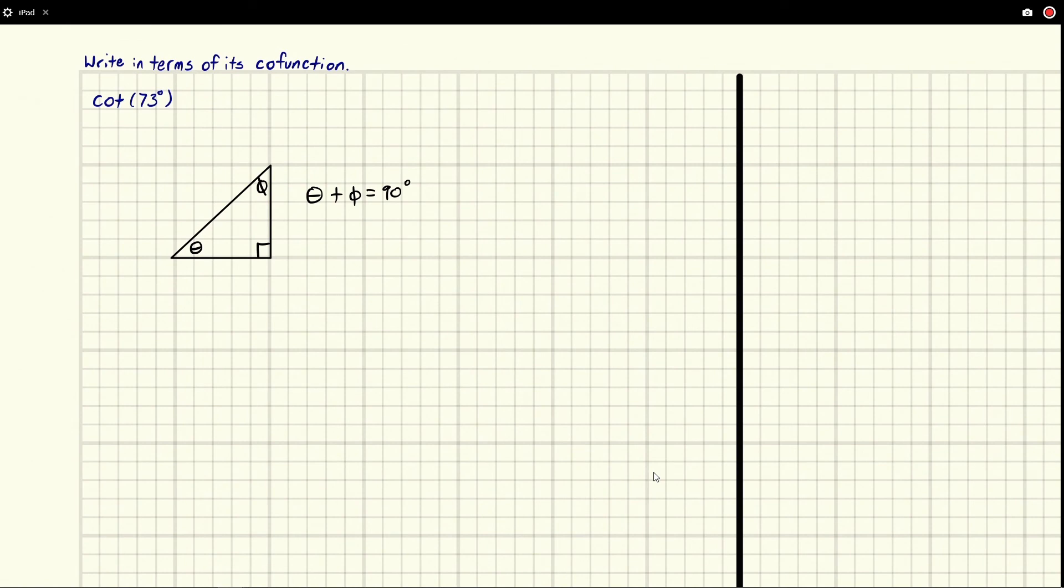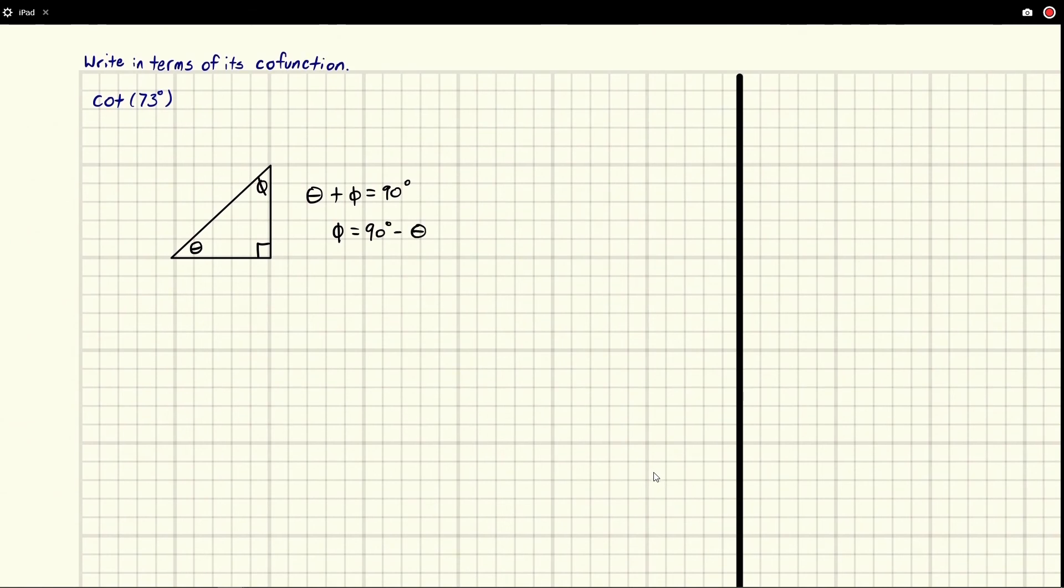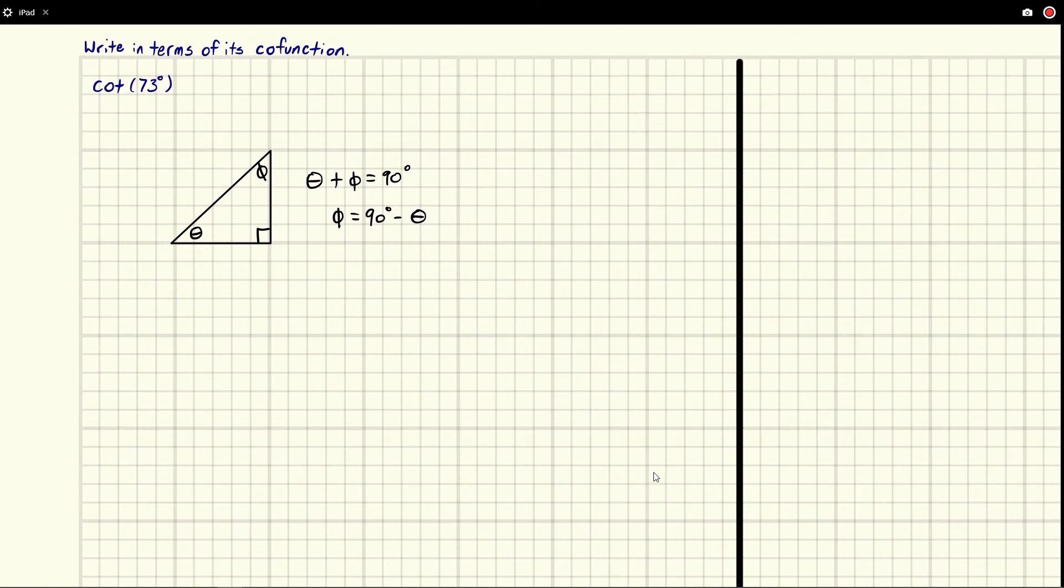And so this is pretty special because check this out: what if I moved the theta to the other side so I had phi is equal to 90 degrees minus theta? What this would mean is I can describe this angle here in terms of this angle here. So for example, if I call this side A, this side B, and this side C, well, let's write out sine of this angle just to demonstrate.